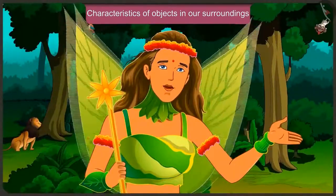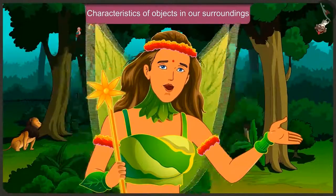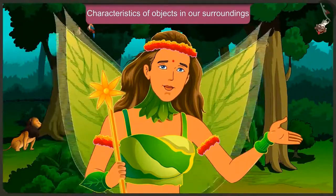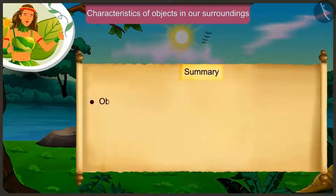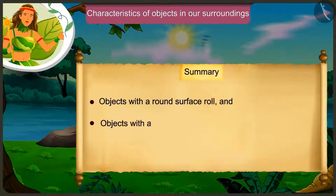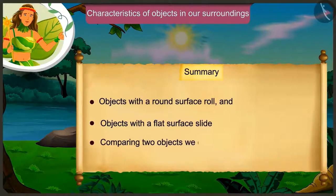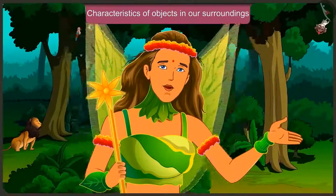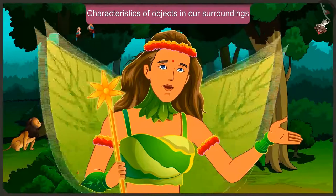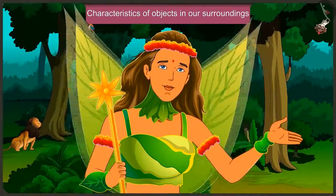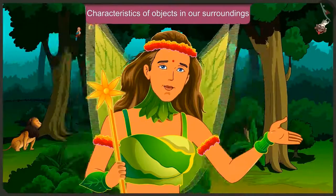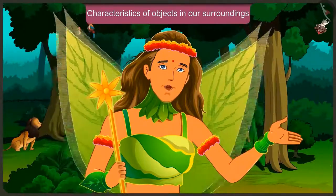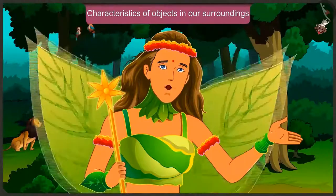Through Appu and Jaggu's conversation, we came to know that objects with a round surface can roll and objects with a flat surface slide. By comparing two objects, we can find out about their length. You must also try to see such characteristics in the objects around you.